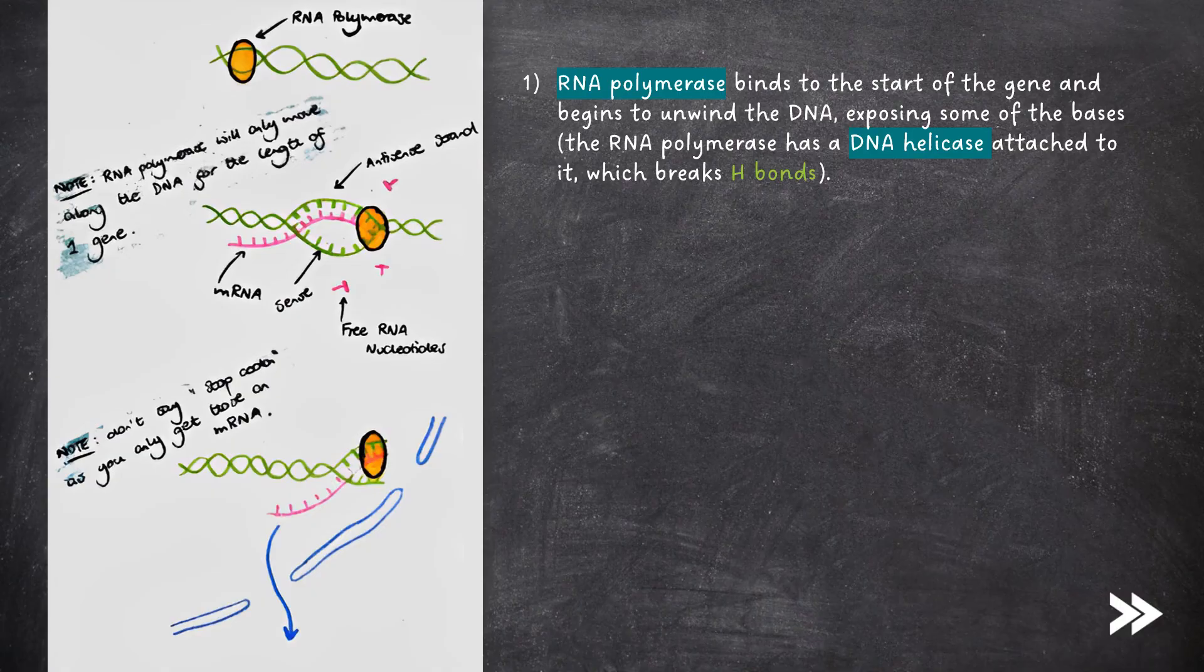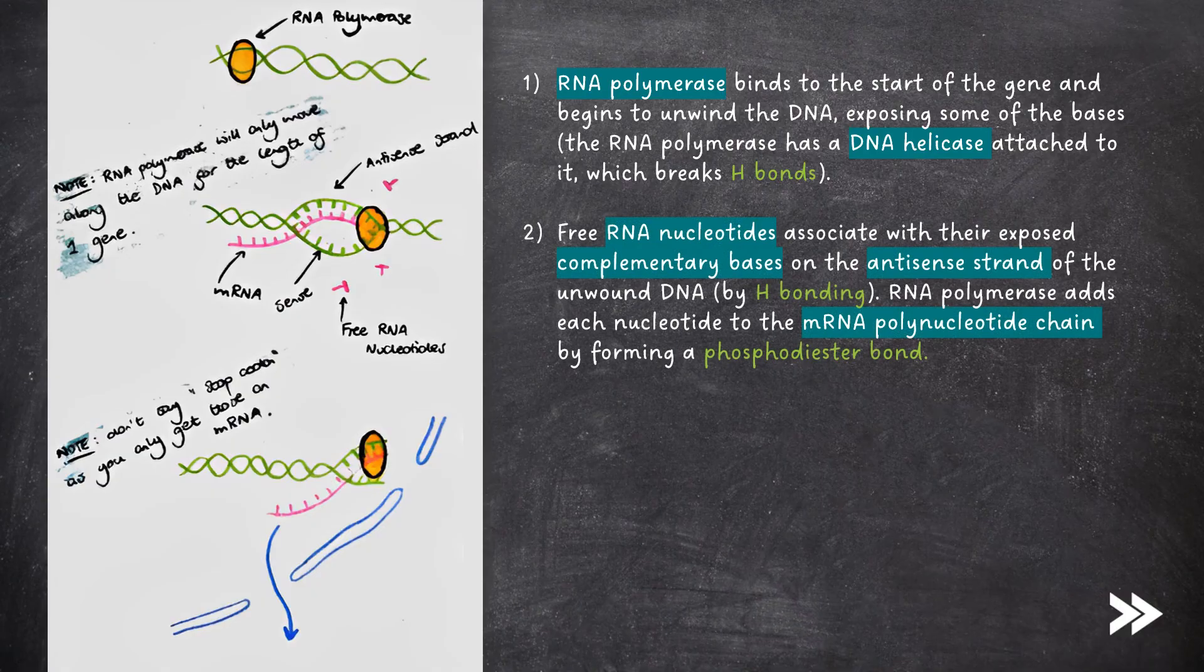Next, free RNA nucleotides associate with their exposed complementary bases on the antisense strand of the unwound DNA by hydrogen bonding. Just to note that in the DNA double helix, which is comprised of two strands, one strand is called the sense strand and the other is called the antisense strand.